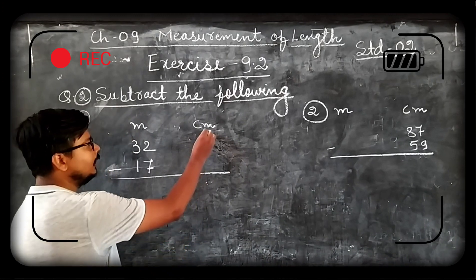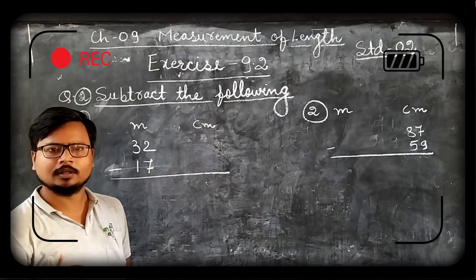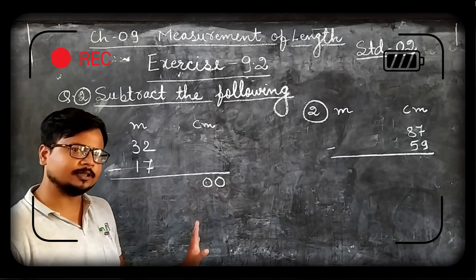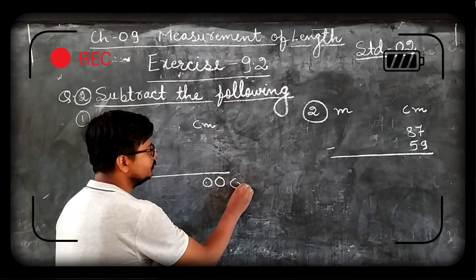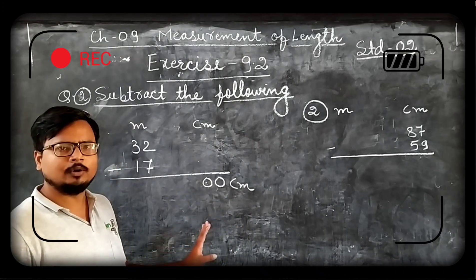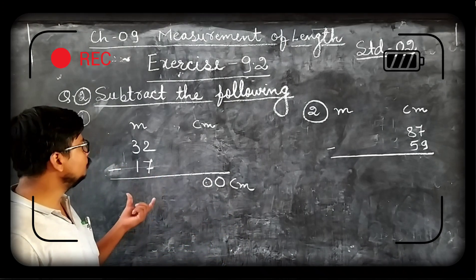As you can see here, in centimeters nothing is given. So we can write here zero zero, or you can leave this space also. Either you write zero zero centimeter or zero centimeter or you leave this. No need to write anything. Now come to this one.